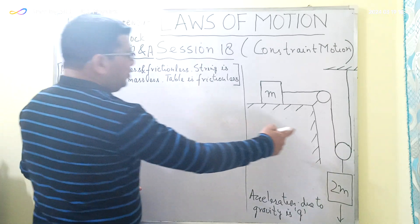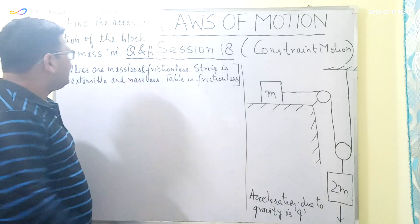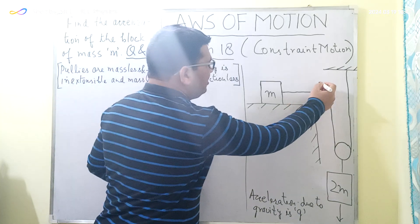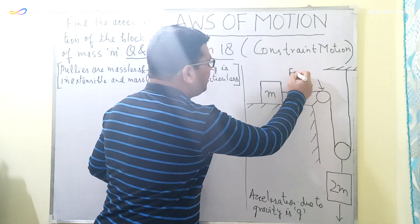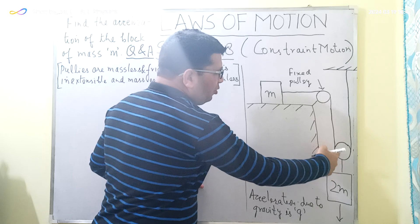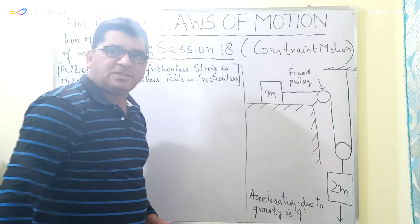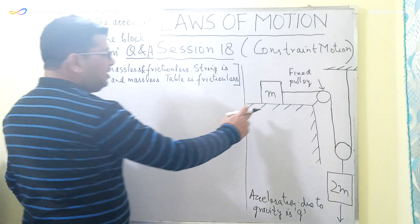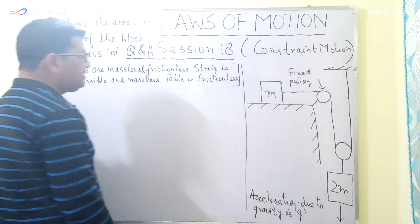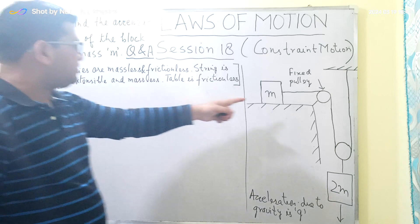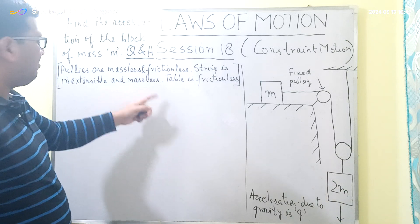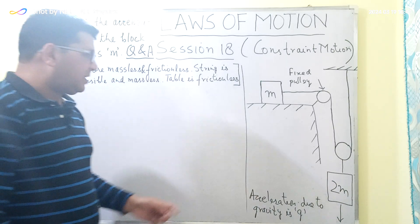The pulleys are very light, so we consider them massless and frictionless. There is one fixed pulley and one movable pulley — both massless and frictionless. The table on which the block of mass M is kept is also frictionless. The strings are inextensible and massless. These are the key assumptions for solving this question.